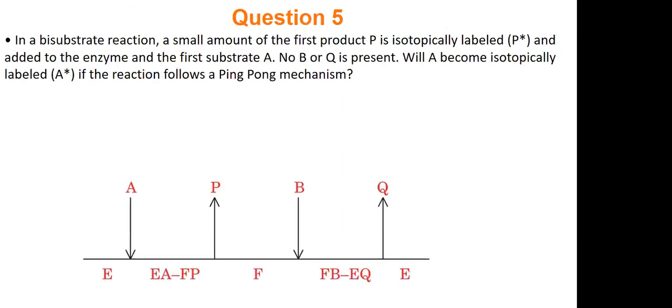Alright, so here's some critical thinking questions for us. And I do have a poll for this, but let me just read this out so you can take a minute to think about it. So I have a bisubstrate reaction and I have a reaction that has P and I label it with some kind of marker so I can tell, let's say I'm using carbon 13 as a marker or something. So it's radioactive carbon that I put in my product and I add this to enzymes. So in a test tube I have P, I have enzyme E, and I have substrate A. I don't have B, I don't have Q.